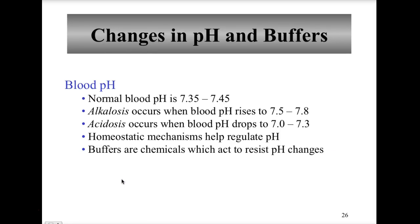Blood pH itself, when you look at the physiological pH, physiological pH is about 7.4. So that's normal blood pH, 7.35 to 7.45.